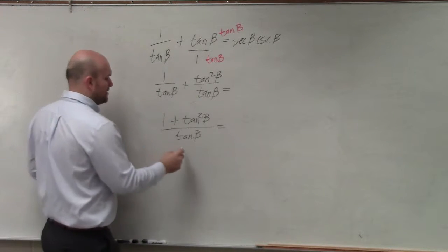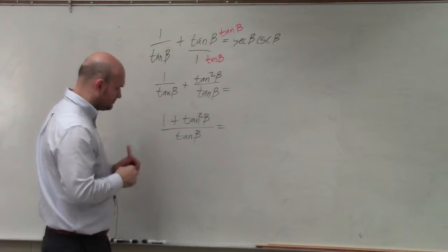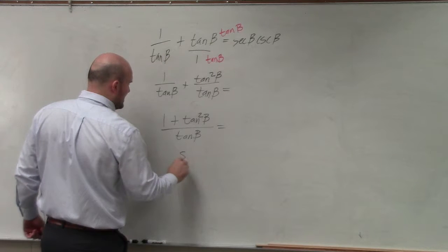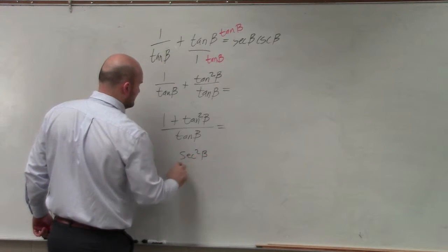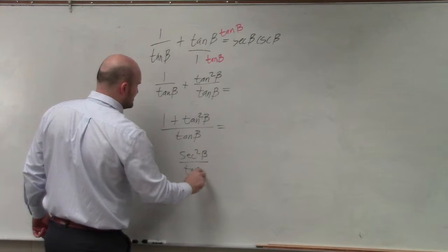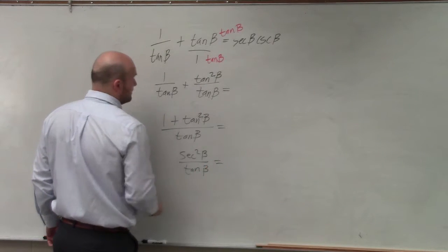Secant squared. So therefore, we have secant squared of beta divided by tangent of beta.